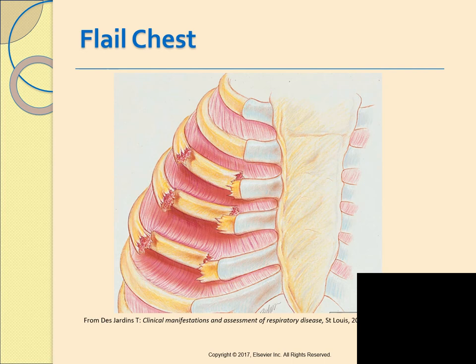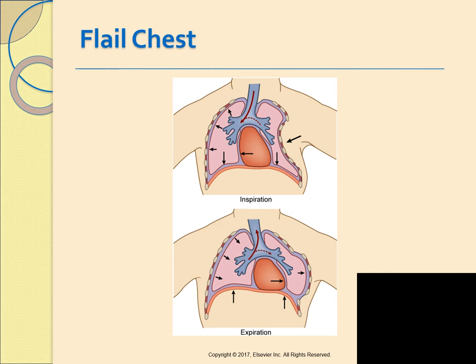A flail chest results from fracture of several consecutive ribs in two or more separate places, causing an unstable segment. It can be caused by fractures of the sternum and several consecutive ribs. The affected flailed area moves in the opposite direction from the intact chest: during inspiration it is sucked in, and during expiration it bulges out. This is called paradoxical chest movement. It prevents adequate ventilation, increases the work of breathing, and the underlying lung may have contusions contributing to hypoxemia.